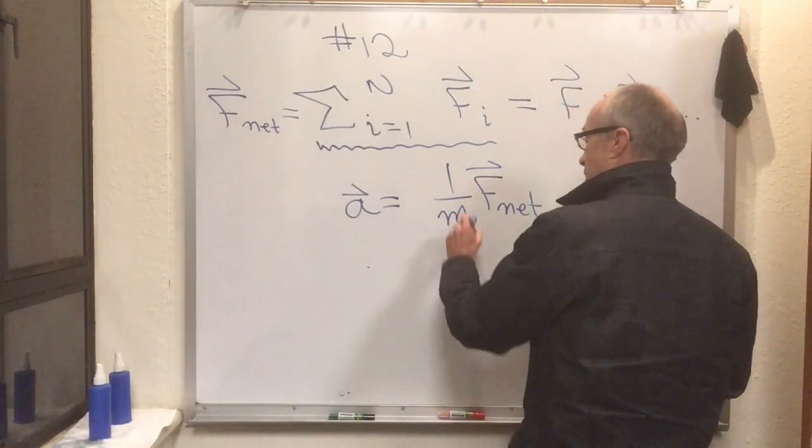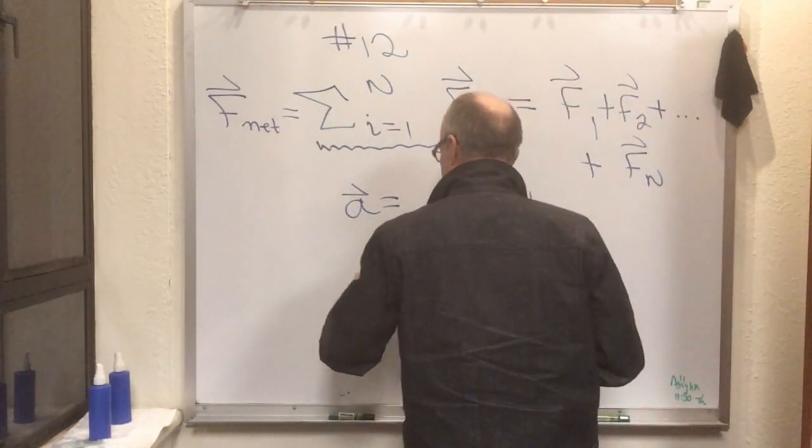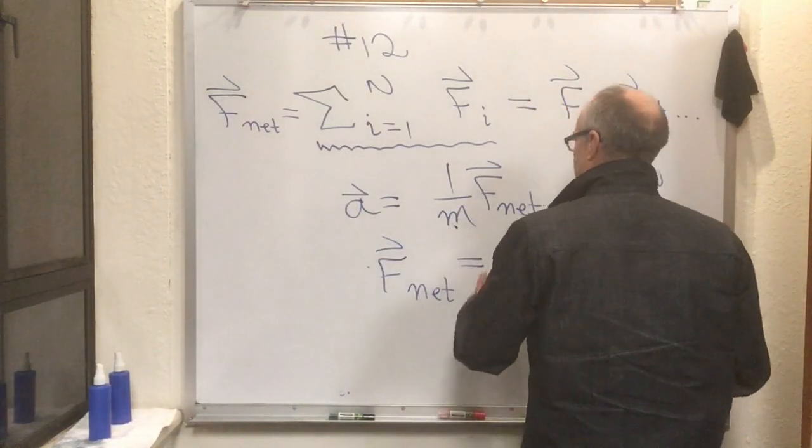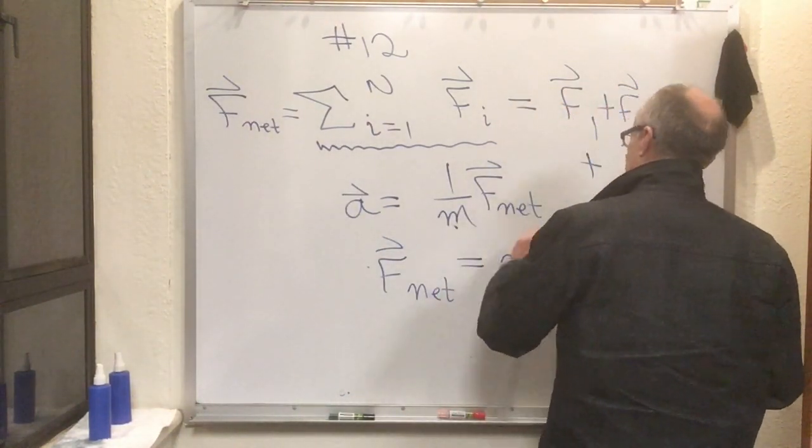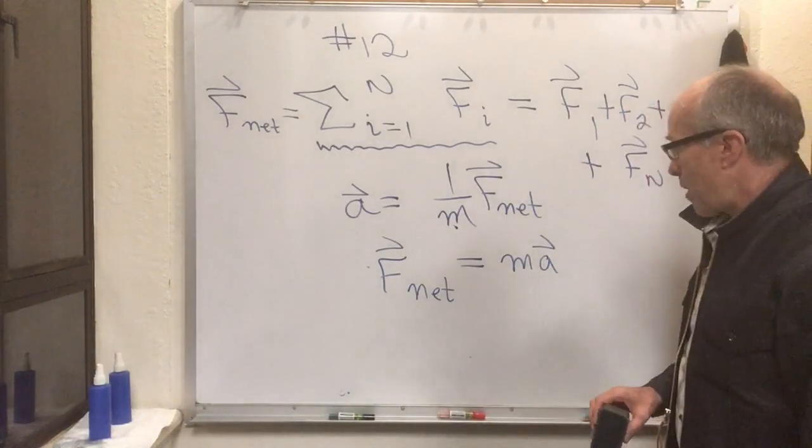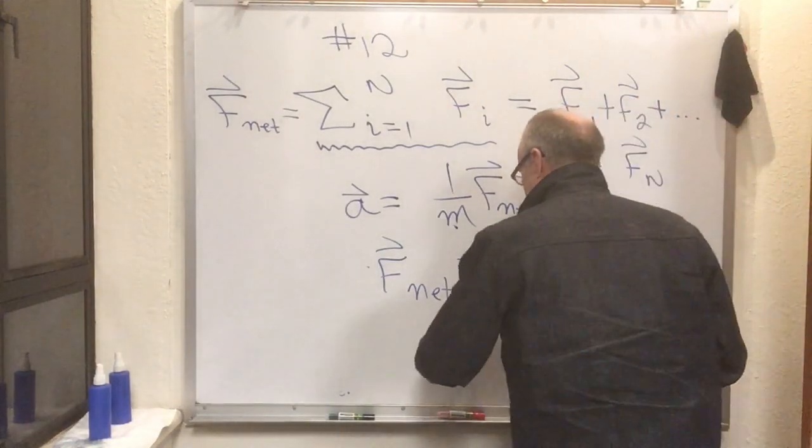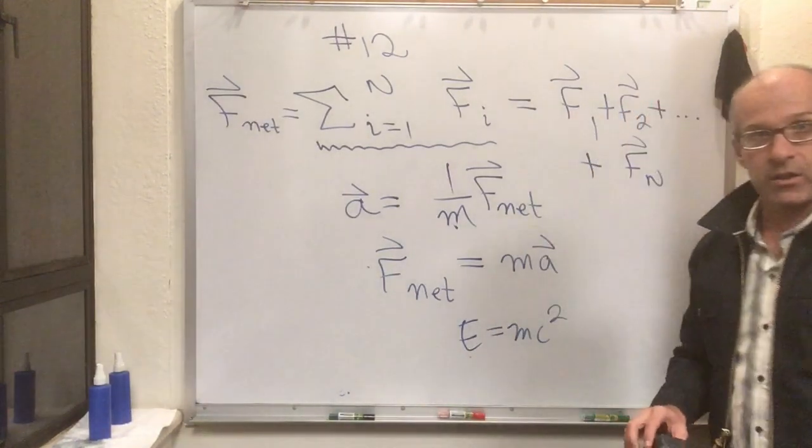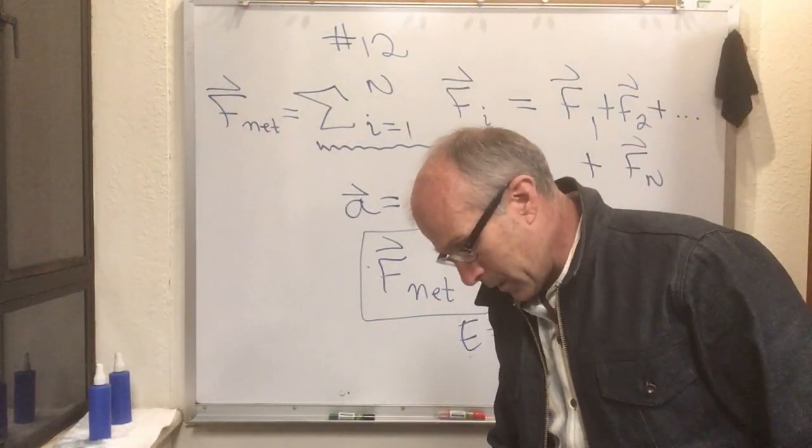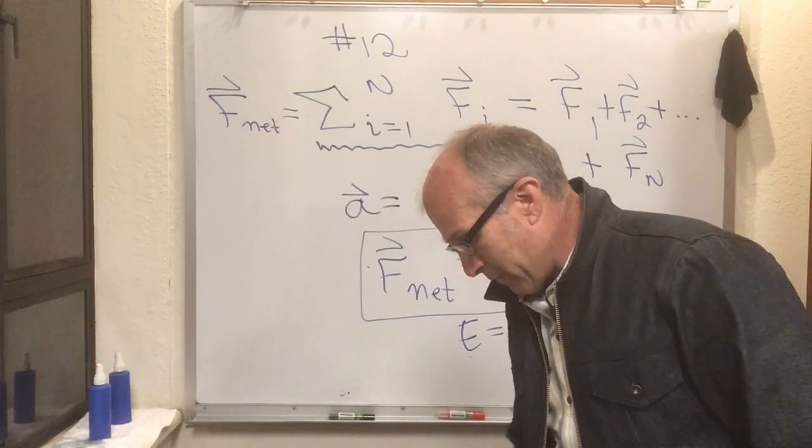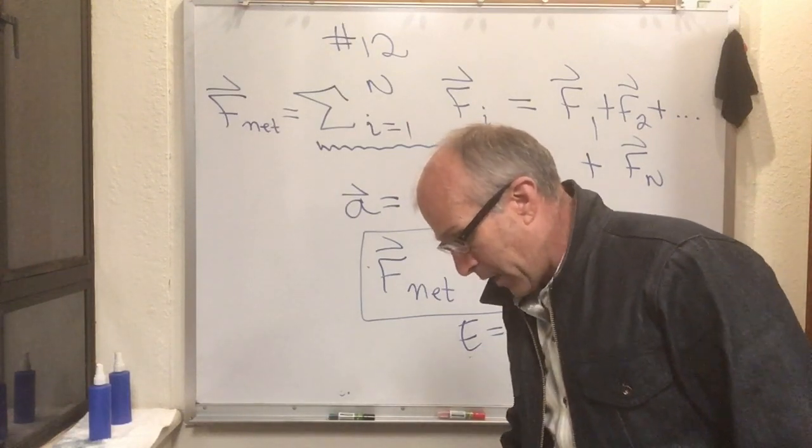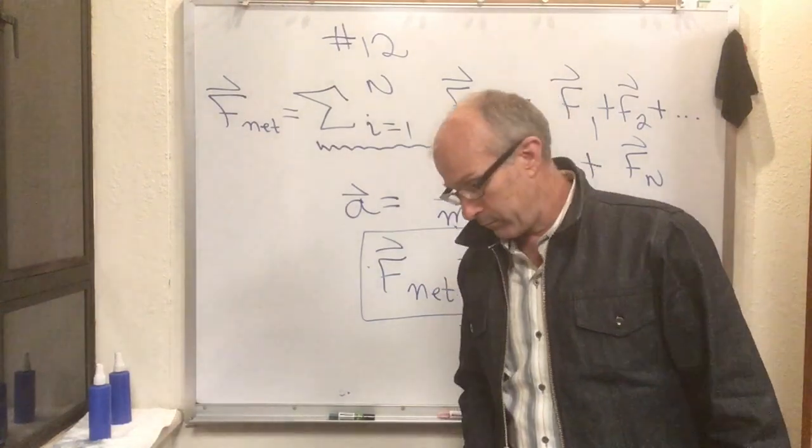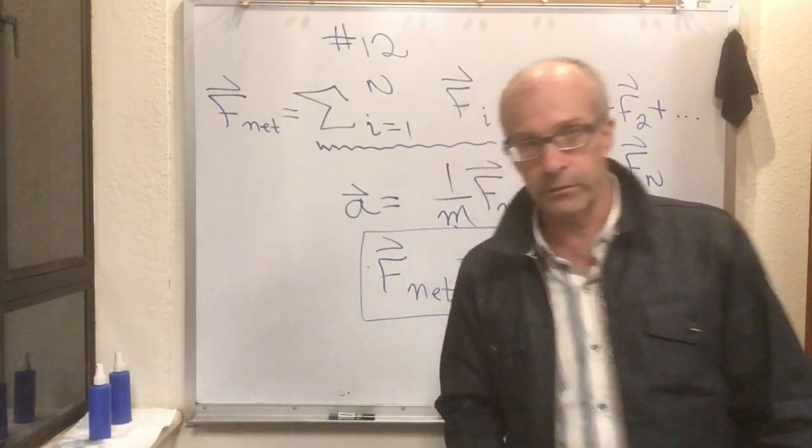And you get F net just by vectorially adding up all the forces in a problem. So we can multiply this equation through by m and then we have that the total force on a particle is equal to ma. And that is probably, maybe other than E equals mc squared, the most famous equation in all of physics. Hopefully you can read everything in chapter five up to 5.5. That's it, flip lecture 12.